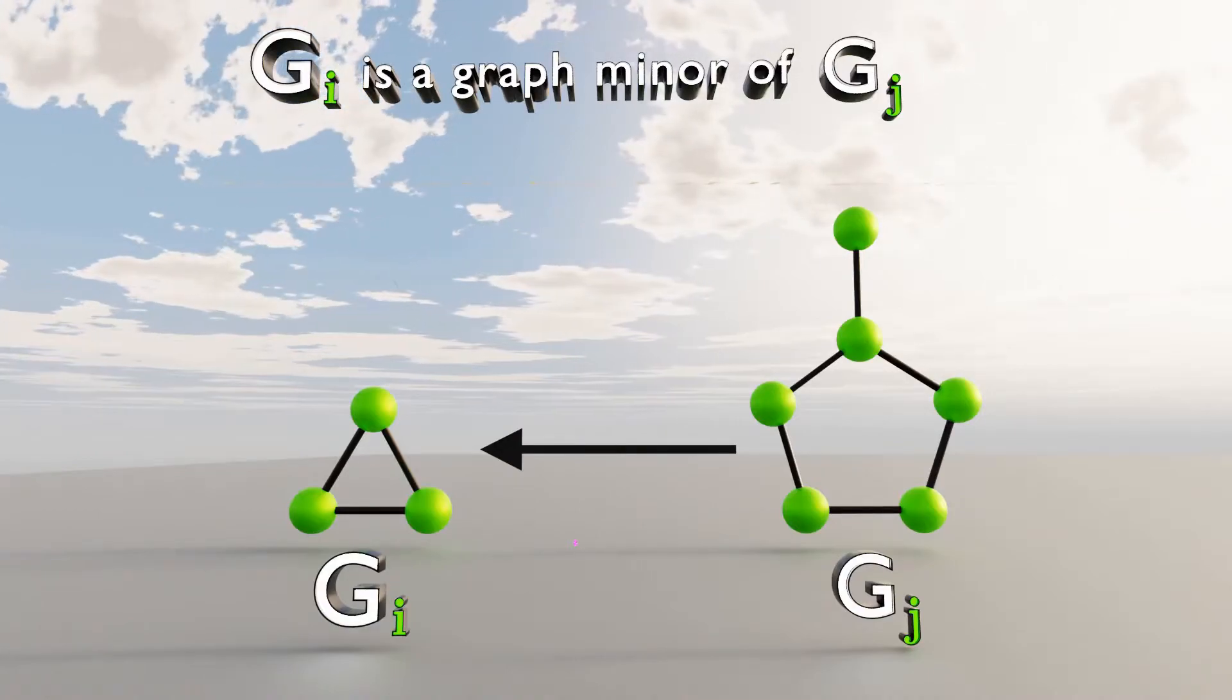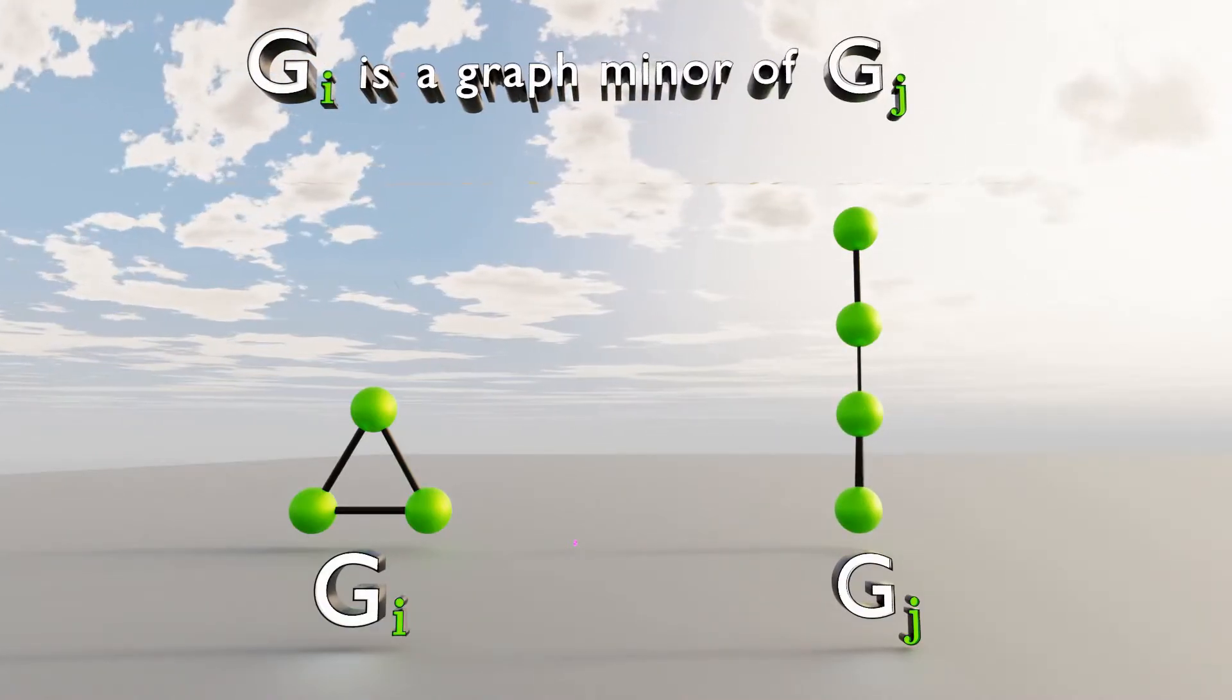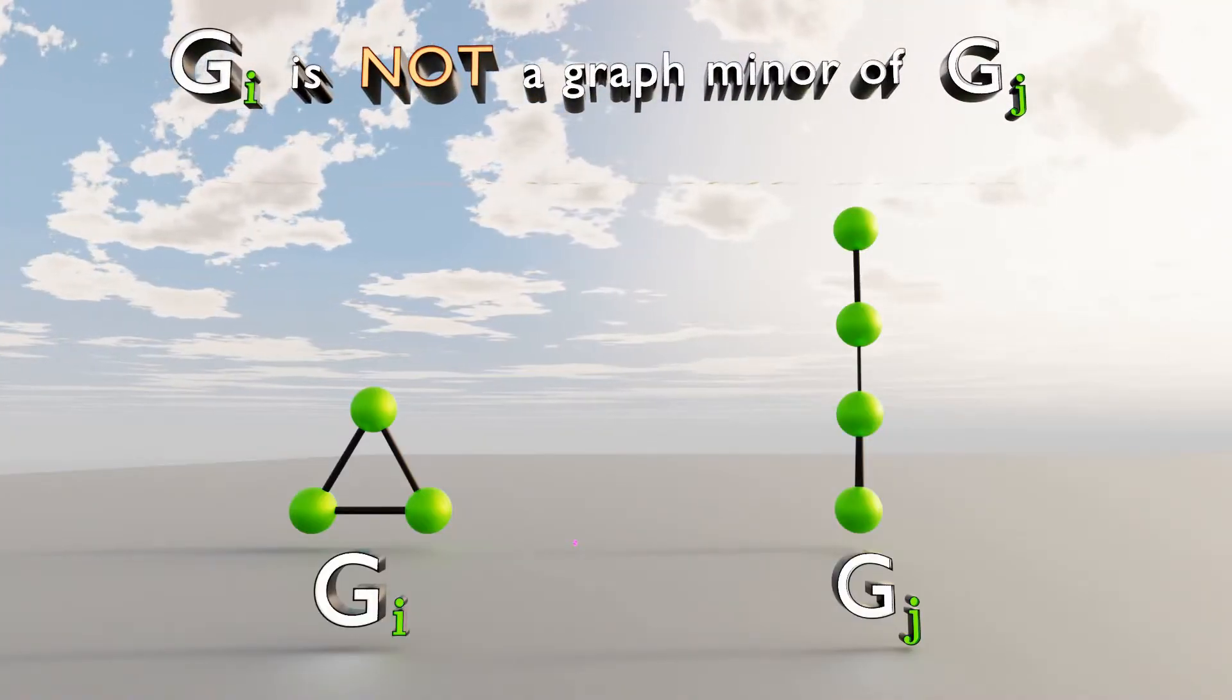But if you turn the vertices like this, graph number I is no longer a graph minor of graph number J.